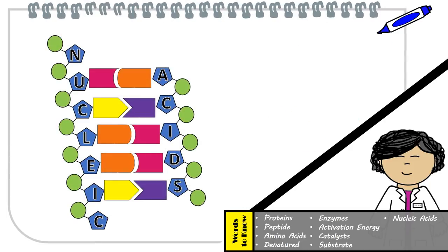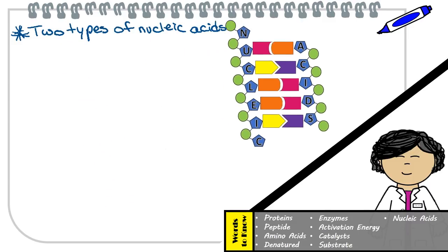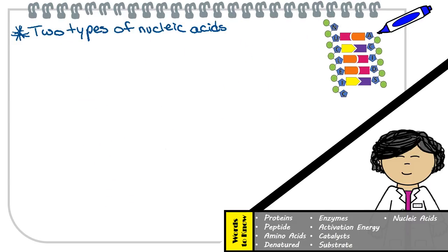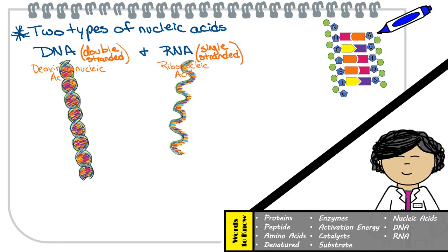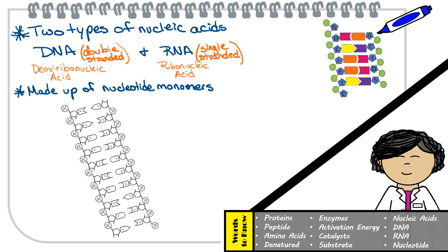There are two types of nucleic acids you need to be able to identify. First is deoxyribonucleic acid, also known as DNA, which is double-stranded. Then there is ribonucleic acid, also known as RNA, which is single-stranded. Both are made up of nucleotide monomers.